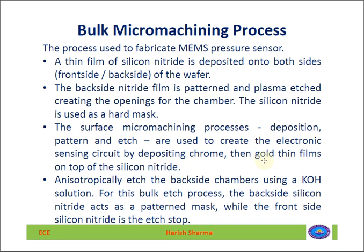To understand the bulk micro machining process, we can take the example of a MEMS pressure sensor. At the start, silicon nitride is deposited on both sides of the silicon wafer — a thin film of silicon nitride is deposited on both sides of the silicon wafer.